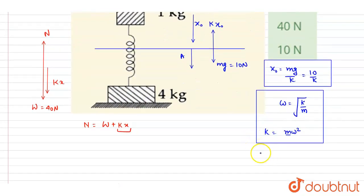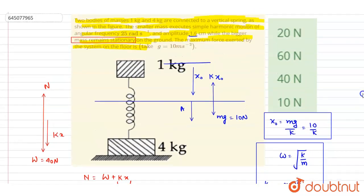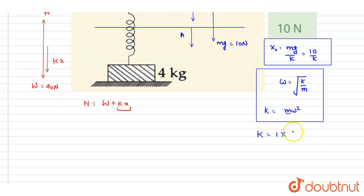So you can get this k value here. So it is m omega square. Omega square is 25 square, so it is 625 N/m.